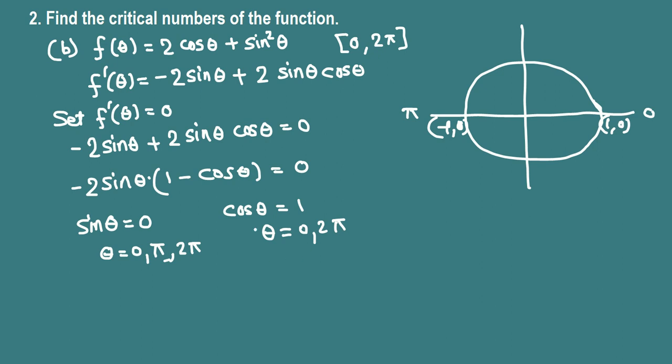And this derivative is defined for all values of theta, so these are the only critical numbers. The critical numbers are 0, pi, and 2 pi.